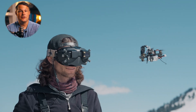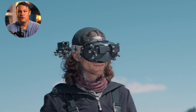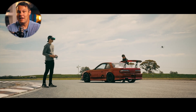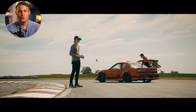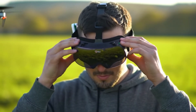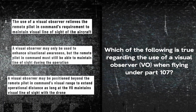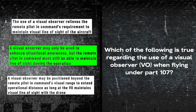For example, if you're flying with FPV goggles, a visual observer must be used to meet the visual line of sight requirement. But the remote pilot in command is still required to be able to regain visual line of sight at any time — they have to be able to take the goggles off and instantly see where the aircraft is. The correct answer is B: the visual observer can assist, but cannot replace the remote pilot in command's requirement to maintain visual line of sight.